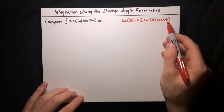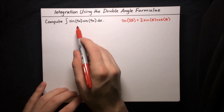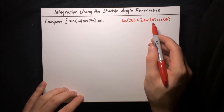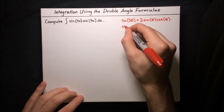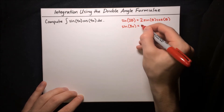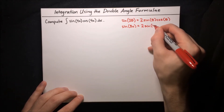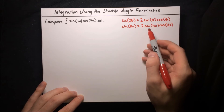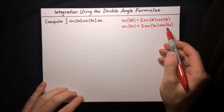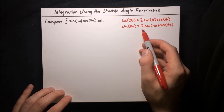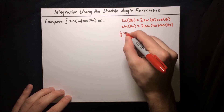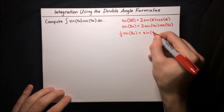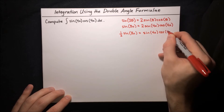This sine of θ cosine of θ part looks a lot like what we have in our integral, except instead of θ we have 4x. So let's write this again using 4x in place of θ. So 2θ becomes 8x, giving us sine of 8x equals 2 times sine of 4x times cosine of 4x. We can isolate the sine of 4x cosine of 4x by multiplying by a half, so a half sine of 8x equals sine of 4x times cosine of 4x.